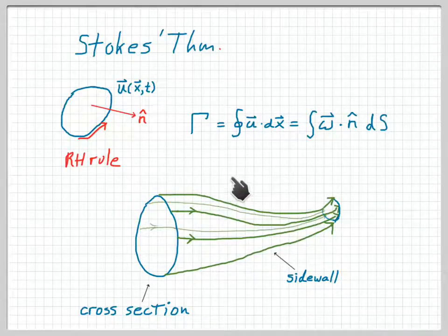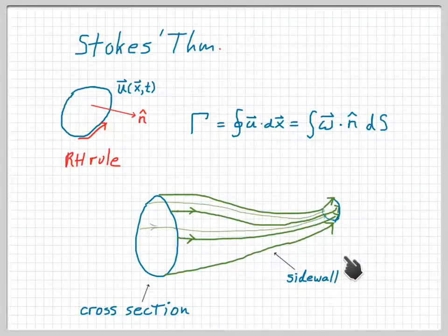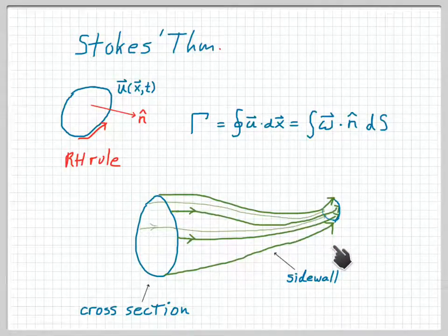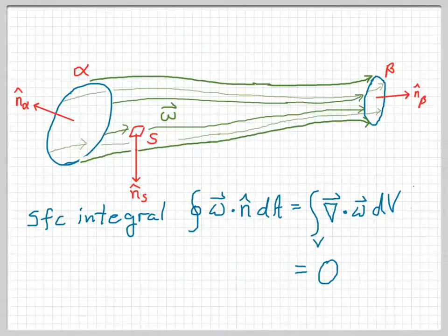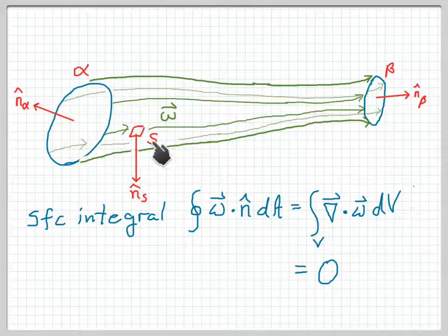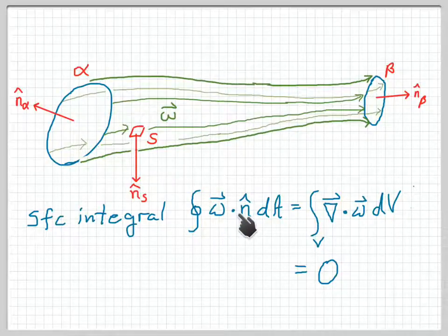We're going to calculate the circulation around this vortex tube and consider a couple of different kinds of surfaces. The first is the side wall — the outer wall of the vortex tube. The second is a cross section. We take two cross sections through the vortex tube, isolating a chunk of it. We then calculate the surface integral over the whole surface composed of the side walls and the two cross sections, labeled alpha and beta, with the side wall labeled S.